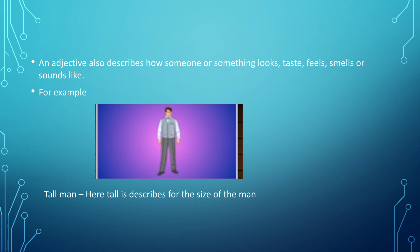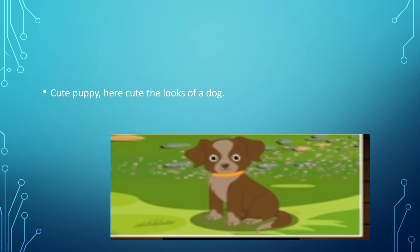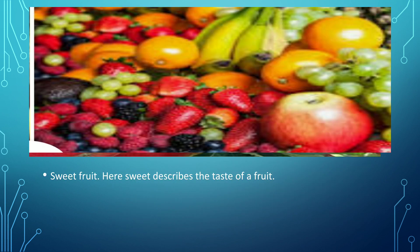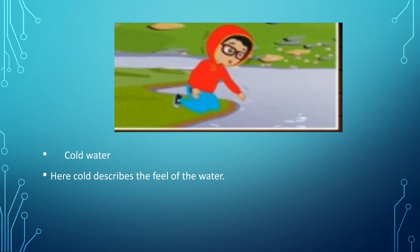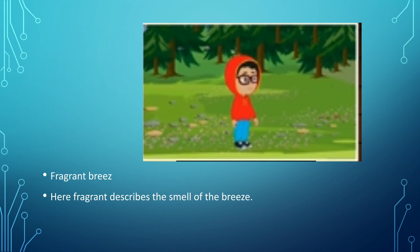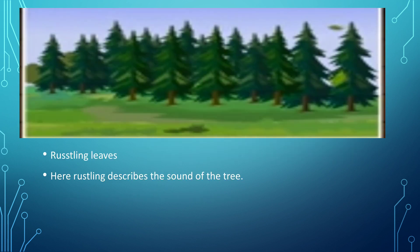An adjective also describes how someone or something looks, tastes, feels, smells, or sounds like. For example, a tall man — here, tall describes the size of the man. Cute puppy — cute describes the looks of the dog. Sweet fruits — sweet describes the taste of a fruit. Cold water — cold describes the feel of the water. Fragrant breeze — fragrant describes the smell of the breeze. Rustling leaves — rustling describes the sound of the tree.